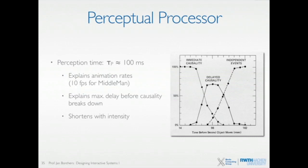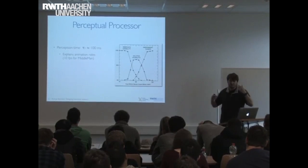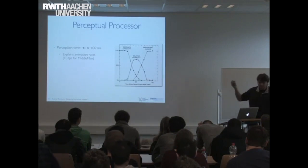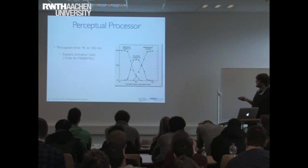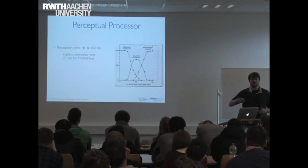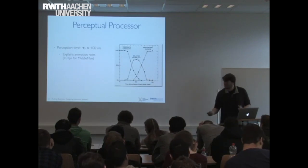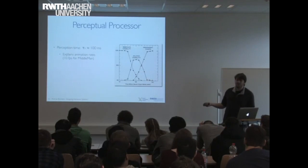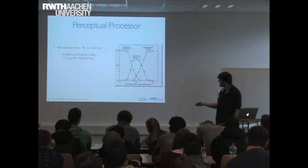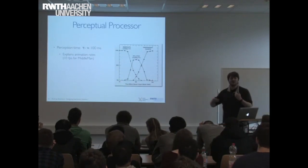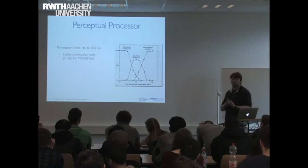This actually explains the animation rates we have in movies. You might ask: if 100 milliseconds still feels like things working together, why not just show 10 frames per second? But at 100ms there is still a perceived delayed causality for most people. The movies we have run at 24 frames per second, which places you in a range where images following each other actually feel like one fluid motion.